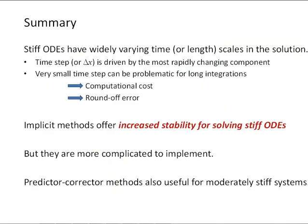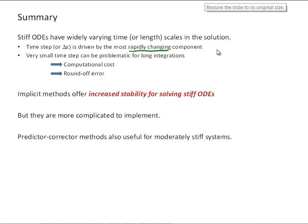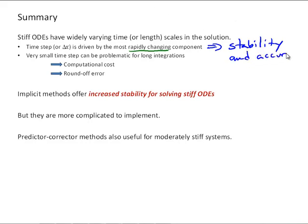So just to summarize, stiff ODEs have widely varying time or length scales in the solution. And that makes it so that the time step, or the delta x if it's an ODE in terms of length, is driven by the most rapidly changing component in order to get a stable solution. We need to do that for stability and accuracy for that quickly changing component, or the shortest time scale. That very small time step can be problematic, especially if we want to do a long integration, because of computational cost and potential build-up of round-off error.